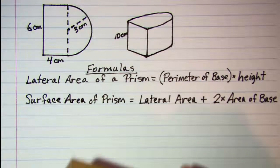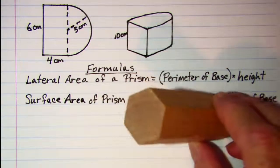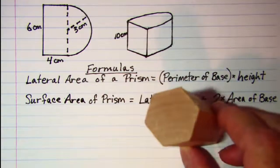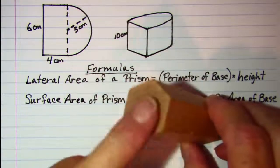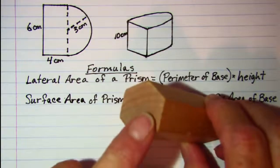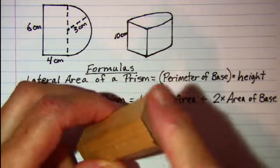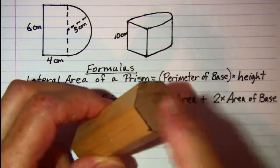Now, when we talk about the lateral area of the prism, right here I have a hexagonal prism. You will notice that up here is one of the bases and it is a hexagon and then on the other side is the other base and it is a hexagon.